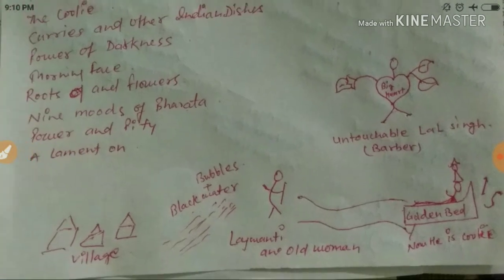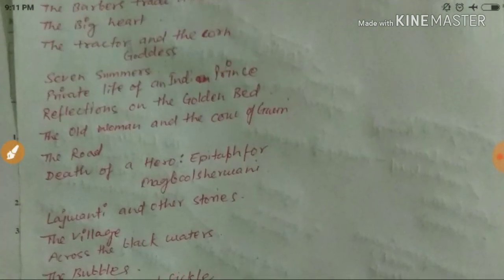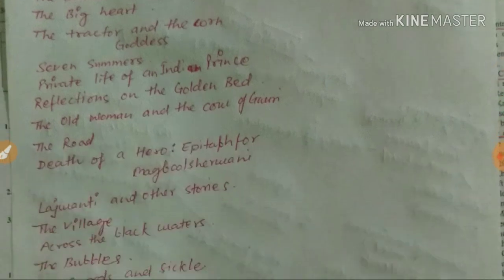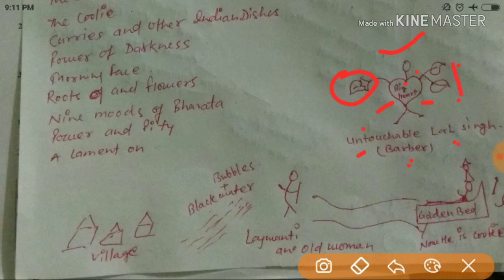Here is a short story I made to help remember Anand's works. In the picture, there is a man who is Untouchable Lal Singh — he is a barber. He is holding two leaves and one bud. He has got a big heart. So from this image you can remember five works: Untouchable, Lal Singh Trilogy, The Big Heart, Two Leaves and a Bud, and The Barber.